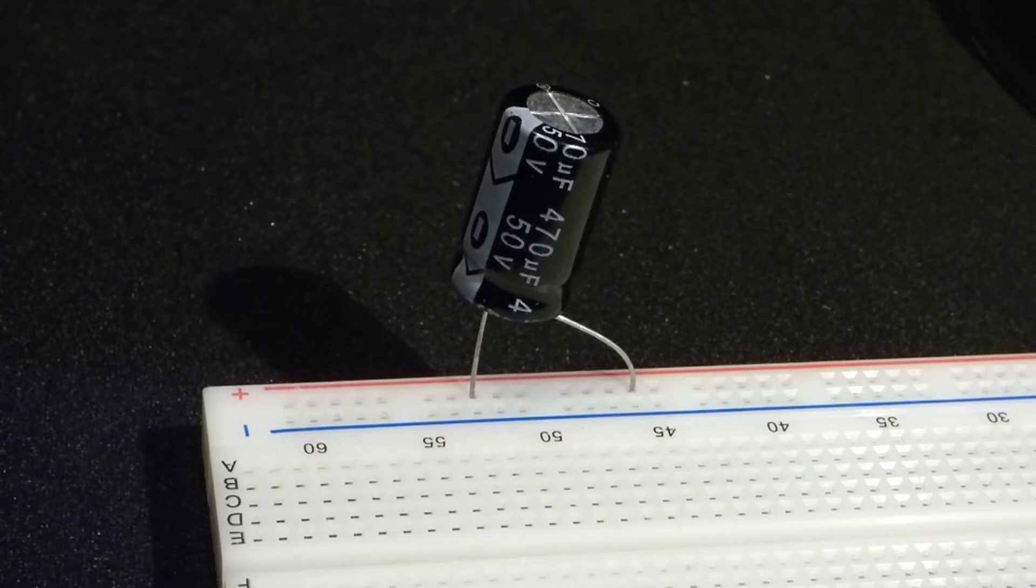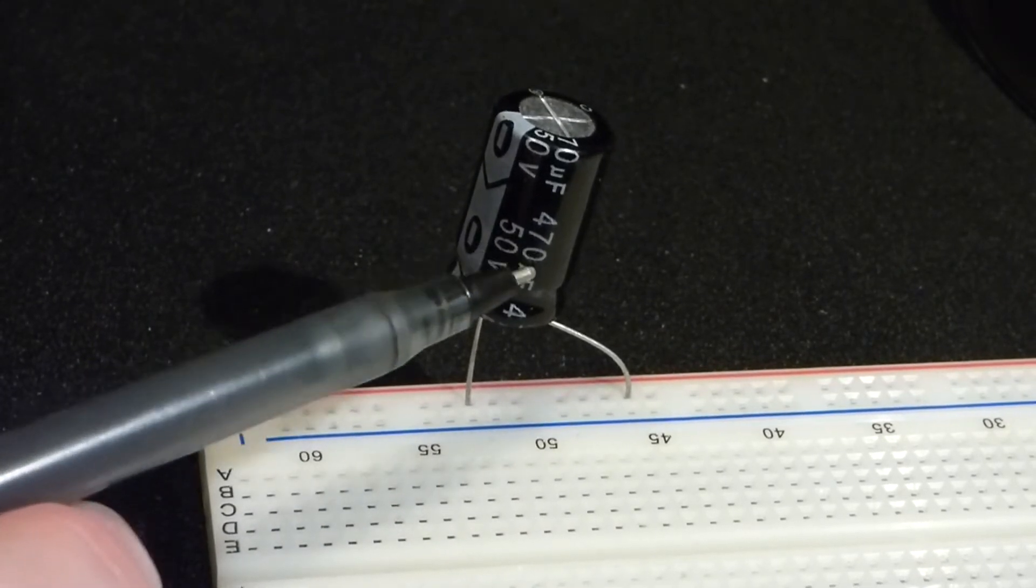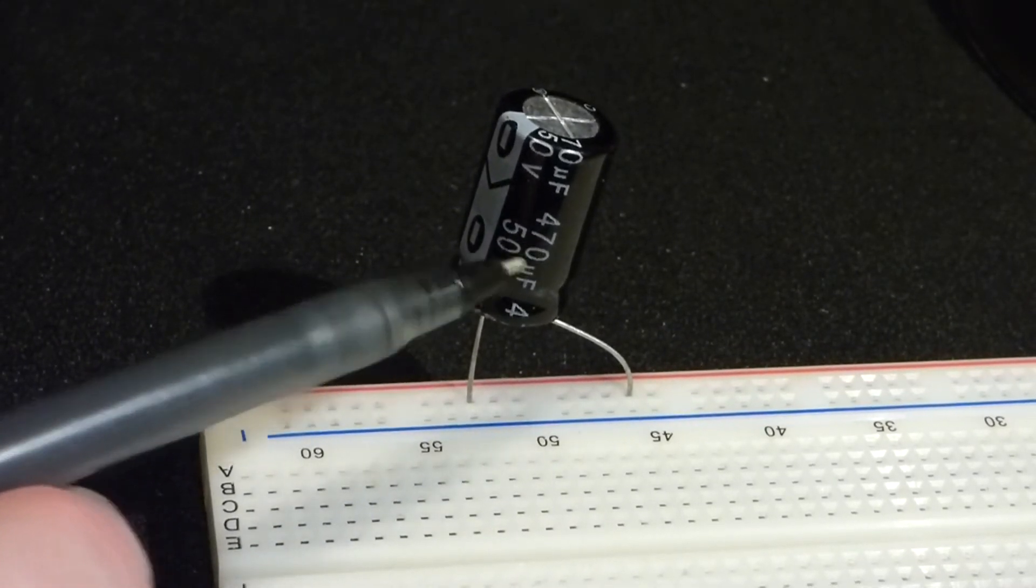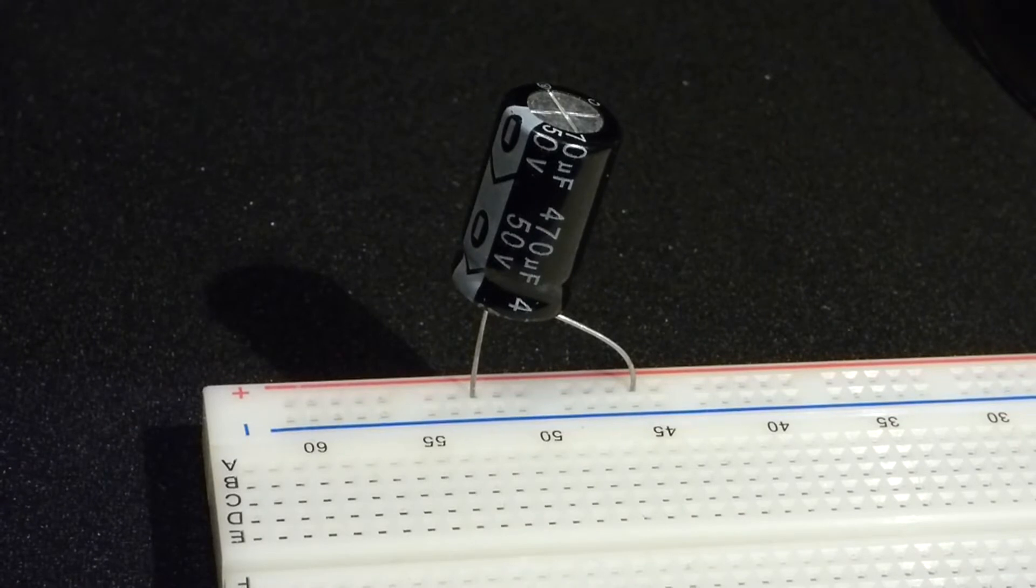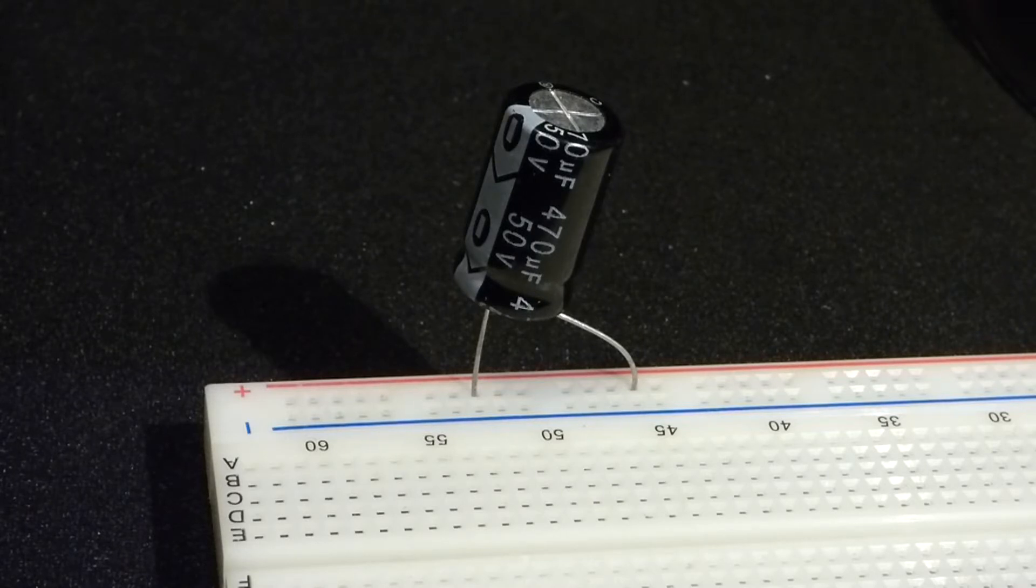If you're dealing with a capacitor that may have high voltage across it or a lot of stored energy because it's a super capacitor or whatever, you don't want to short it out directly. You want to use the right value resistor to make sure the current is low enough to keep everything safe.